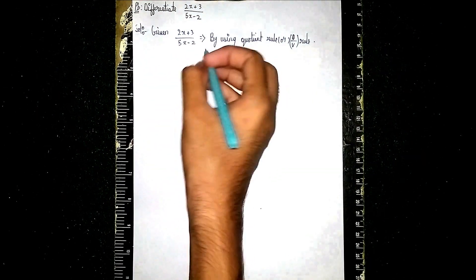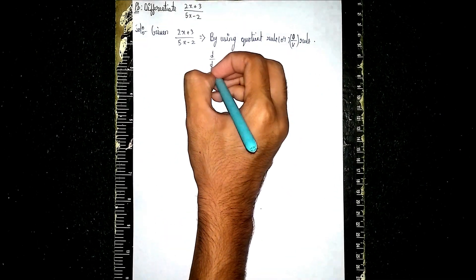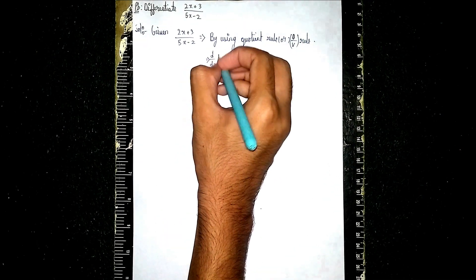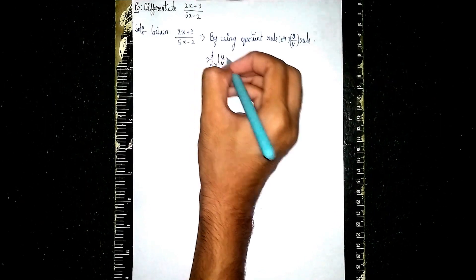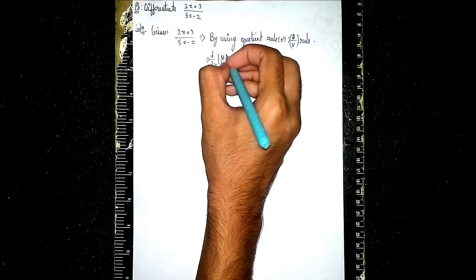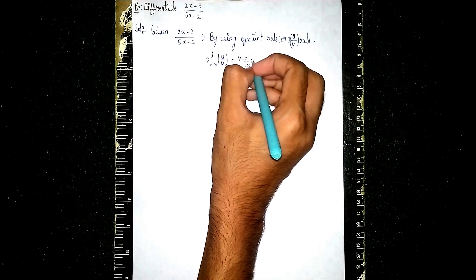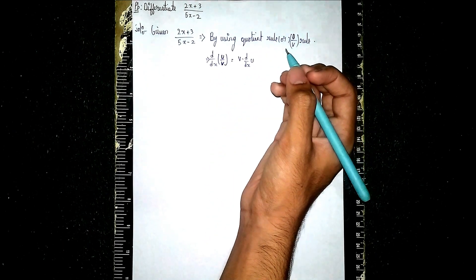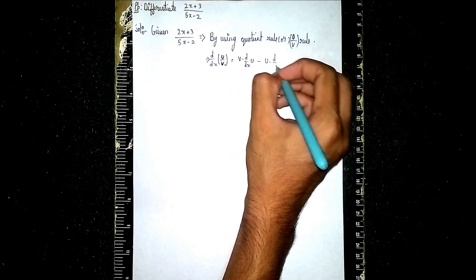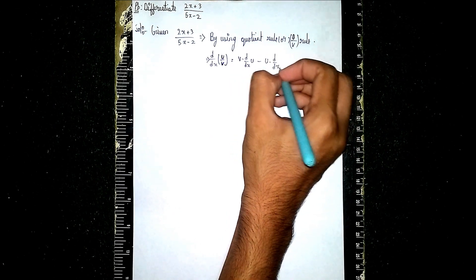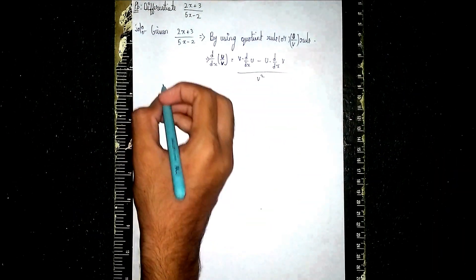Since it is a division, we apply the quotient rule. The formula is: d/dx of (u/v) equals v into d/dx of u, then minus u into d/dx of v, all divided by v squared. This is the formula.